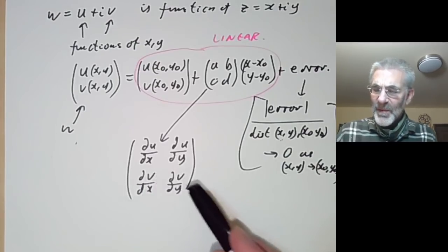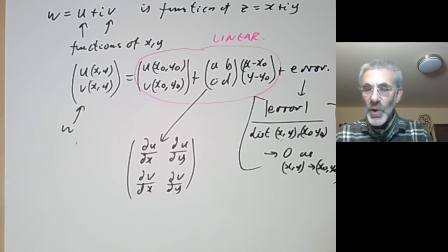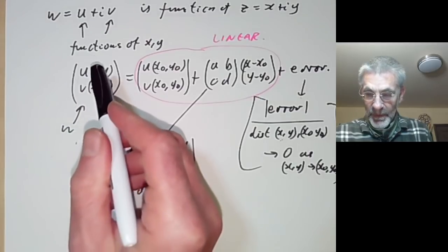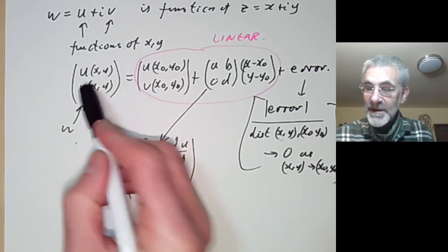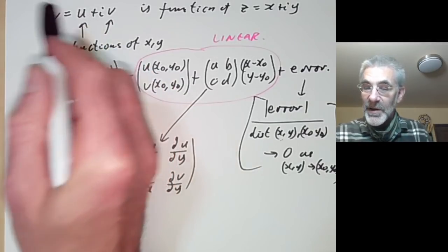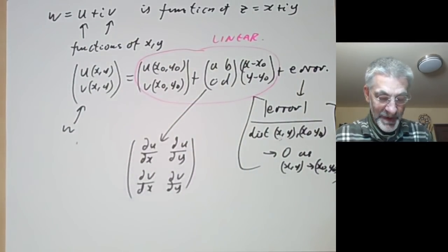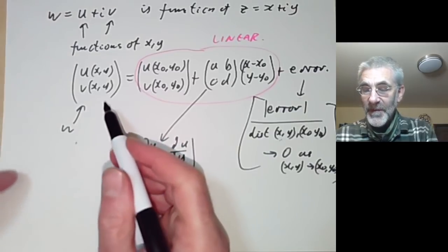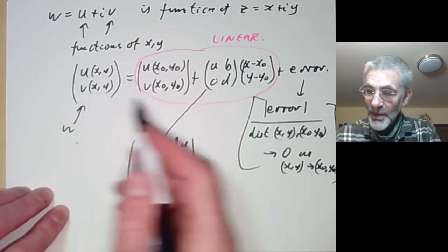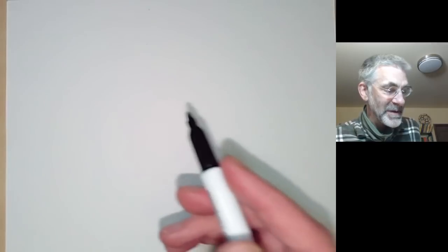So far we haven't really done anything particularly complex. All we've done is discussed a function from the real plane to the real plane and discussed whether it's differentiable. We haven't really used the complex structure at all — we've said nothing about complex variables. So what we've defined here is just real differentiability of functions of two variables. Now we've got to discuss what we mean by complex differentiable.